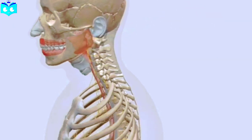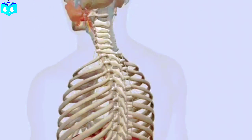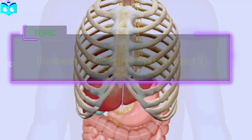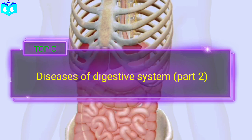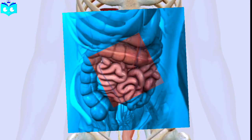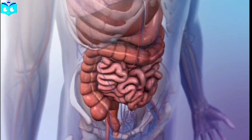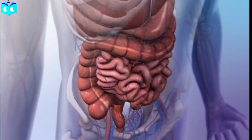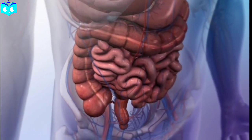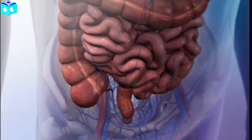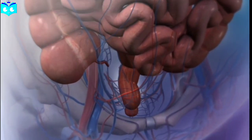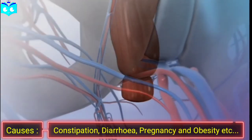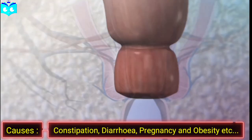Today we will be going through diseases of the digestive system. Hemorrhoids, also known as piles, are a common condition that affects the veins in the rectum and anus. They are caused by increased pressure on the veins in the rectal area, which can be due to a variety of factors such as constipation, diarrhea, pregnancy, and obesity.